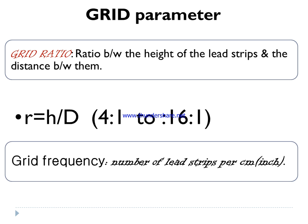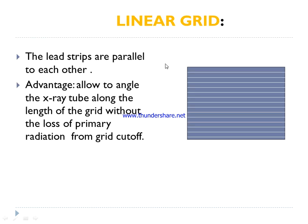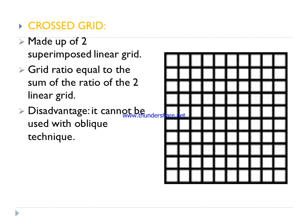The grid ratio ranges from 4:1 to 16:1. Grid frequency is the number of lead strips per centimeter, called grid frequency. There are five types of grids: linear grid, focus grid, moving grid, parallel grid, and cross grid. In a linear grid, the lead strips are arranged parallel to each other in a linear fashion. They allow angulation of the x-ray tube along the length of the grid without grid cutoff loss of primary radiation.